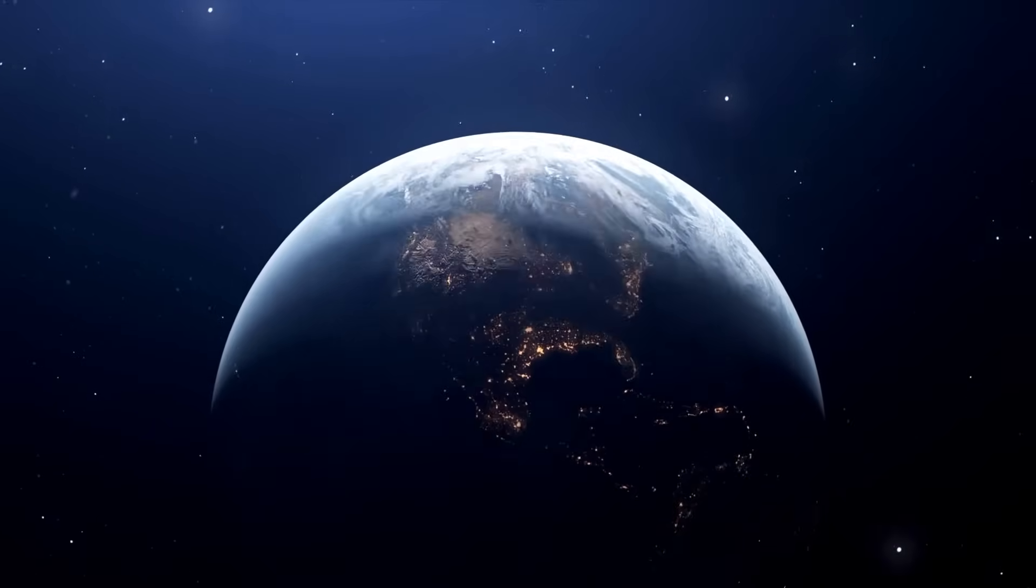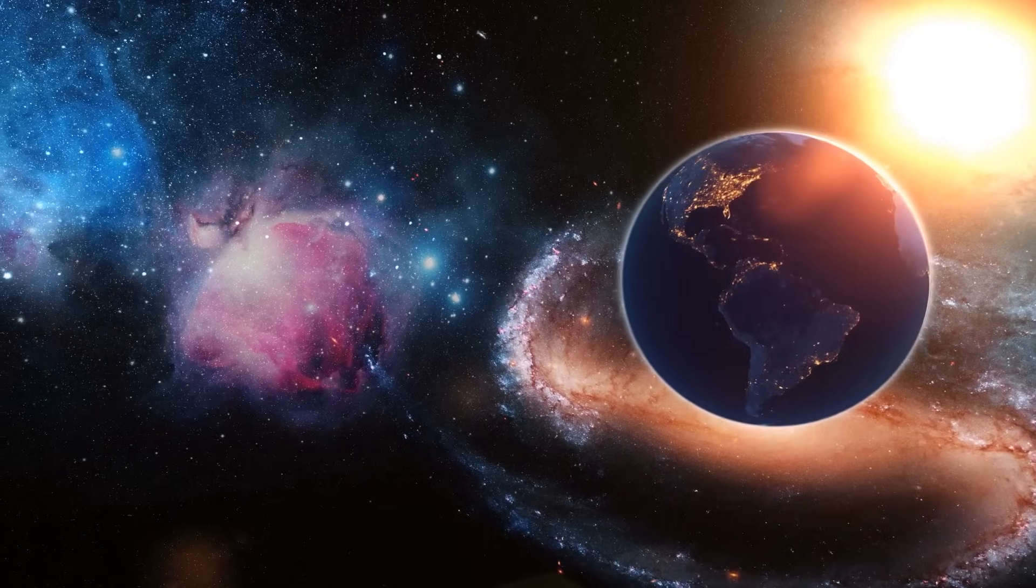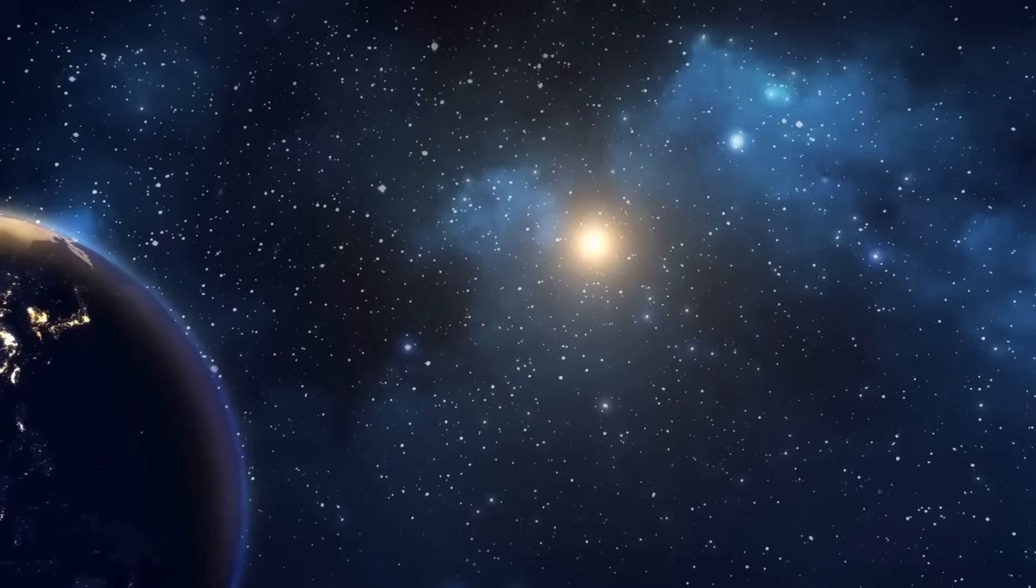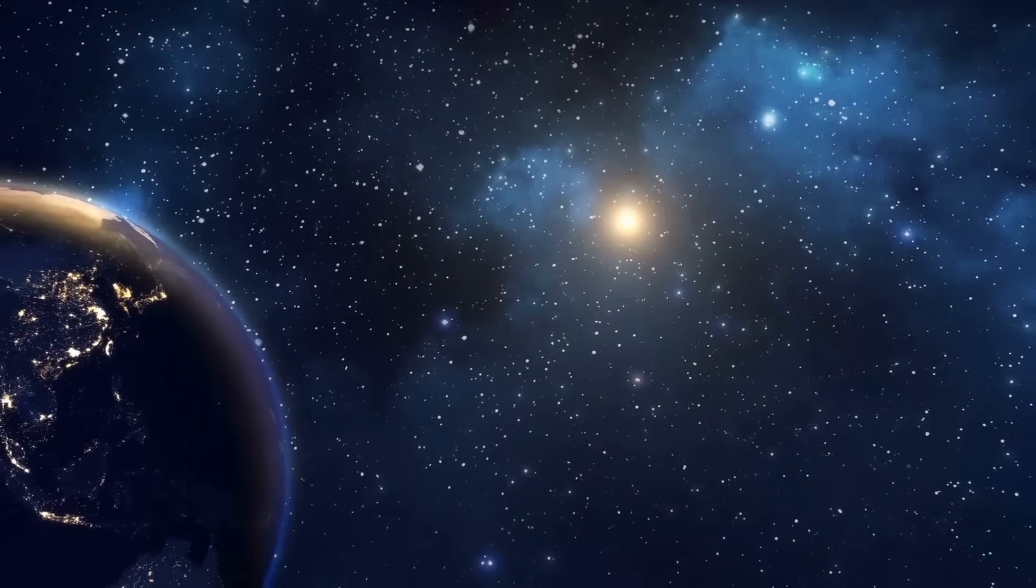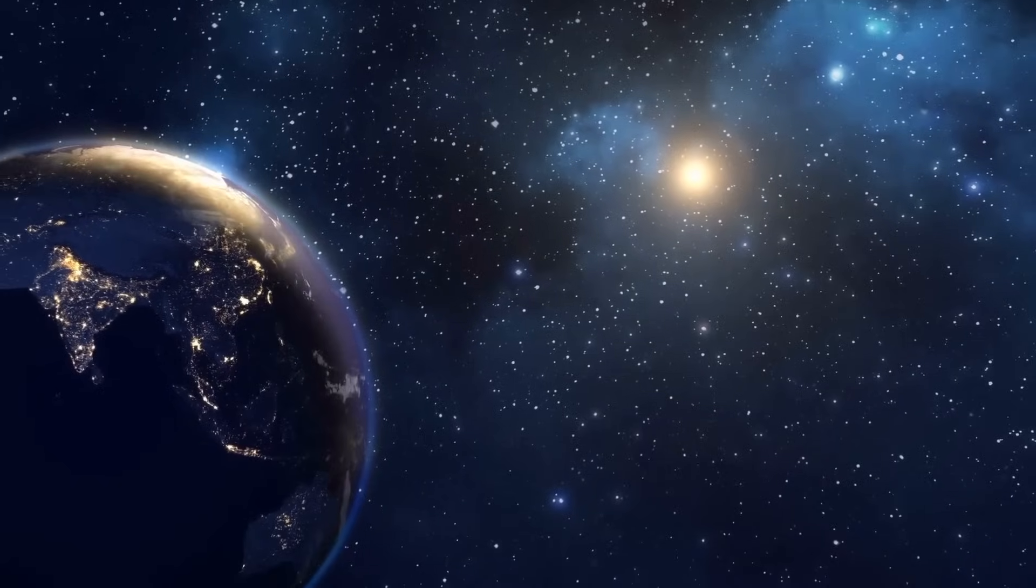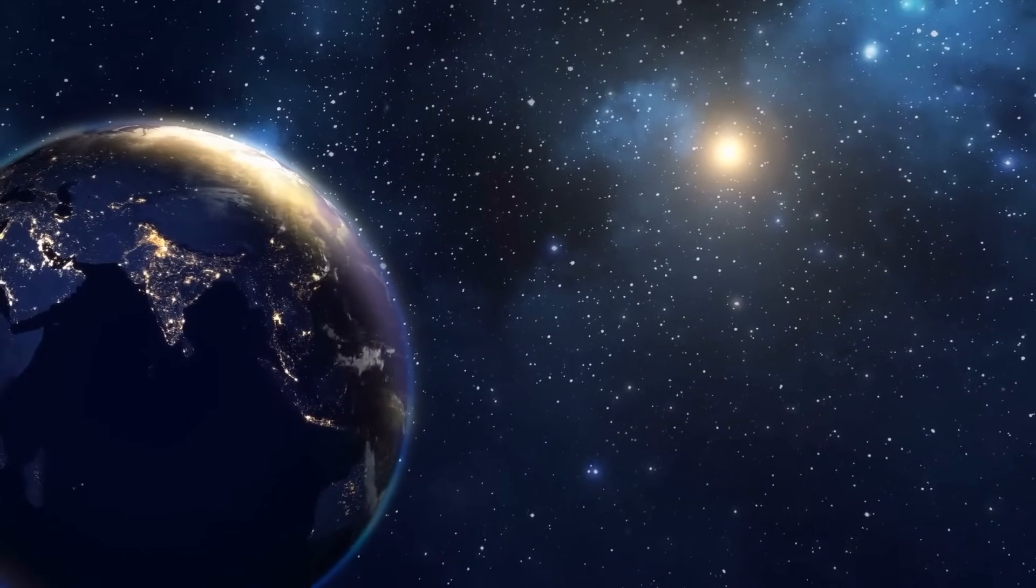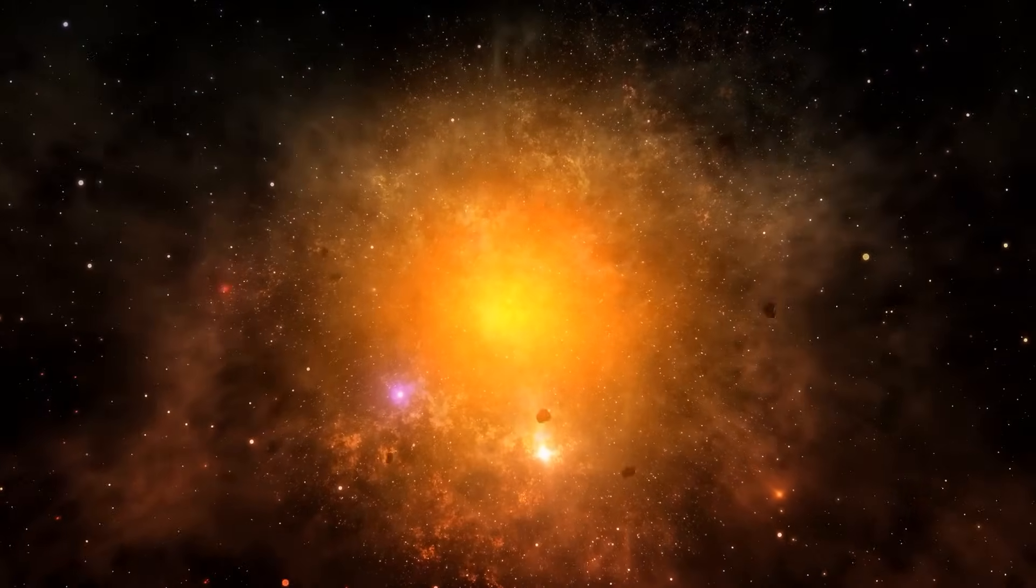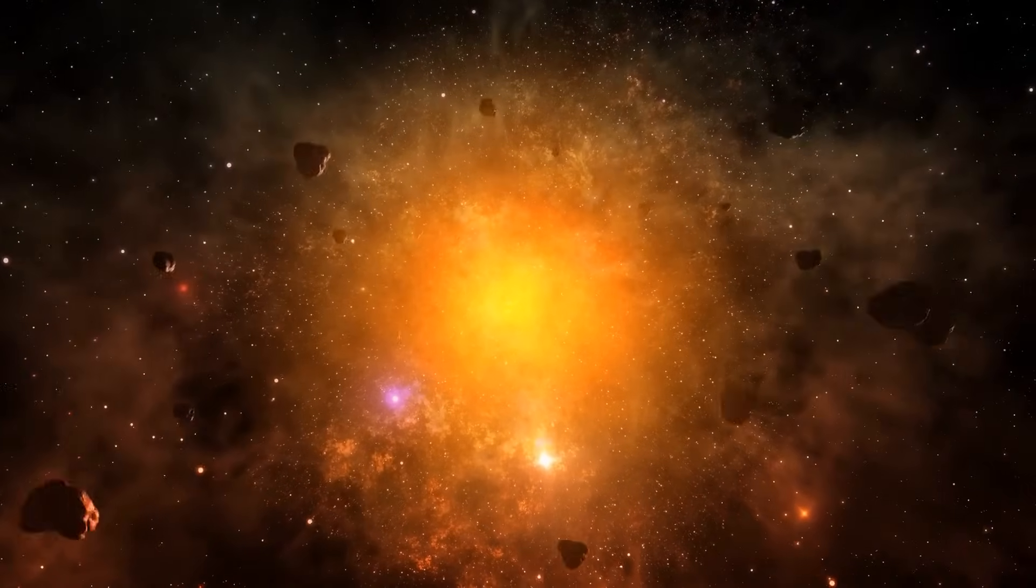Speaking of potential impacts on Earth, it is essential to emphasize that Betelgeuse is located at a distance of about 700 light years. At this considerable distance, a supernova would not pose a direct threat to our planet in terms of physical impact. Despite its immensity, the energy and radiation released by the explosion would be sufficiently dispersed in the vastness of space to reach Earth harmlessly.